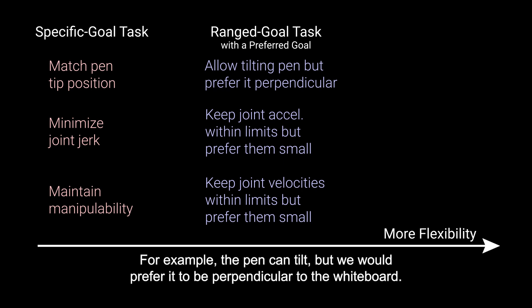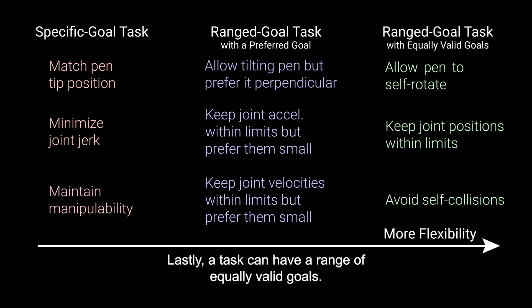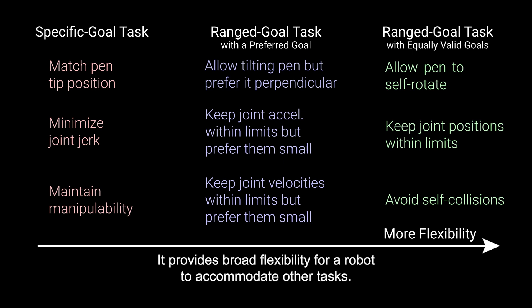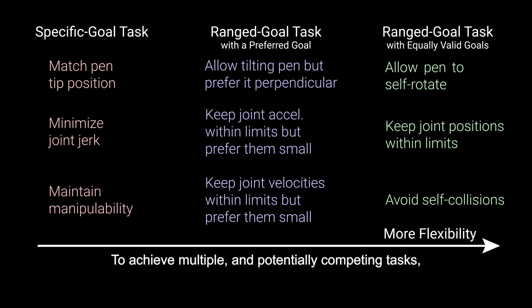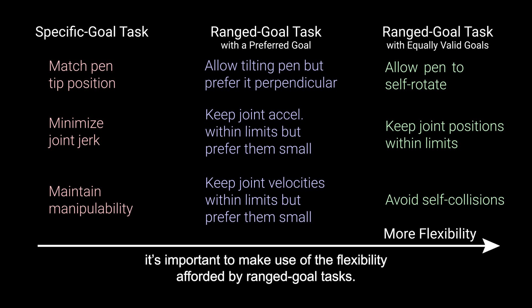For example, the pen can tilt, but we would prefer it to be perpendicular to the whiteboard. Lastly, a task can have a range of equally valid goals, providing broad flexibility for a robot to accommodate other tasks — for example, the pen can freely rotate about its principal axis. To achieve multiple and potentially competing tasks, it's important to make use of the flexibility afforded by range goal tasks.